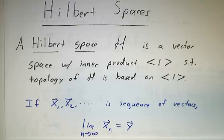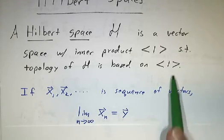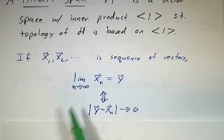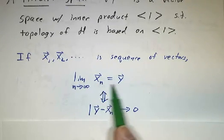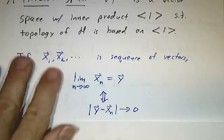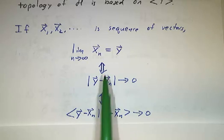The idea is that we're going to use the notion of length that comes from the inner product to tell us what convergence means. So if I say that the limit of a bunch of vectors is another vector, what I'm really saying is that the distance between these vectors is getting less and less. The distance is going to 0. That means that the inner product of y-xn with itself has to be going to 0. If this inner product goes to 0, then we say that it converges.